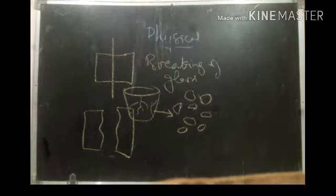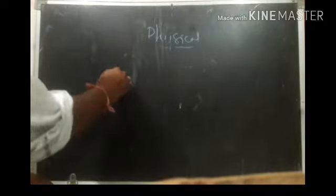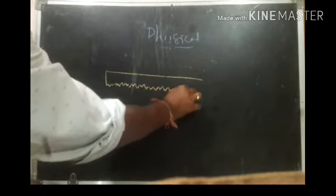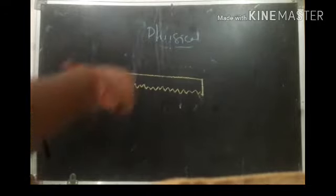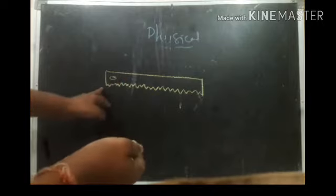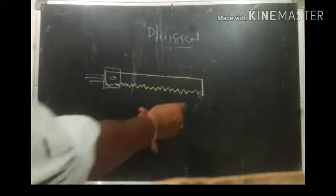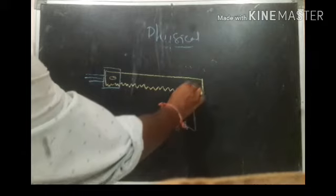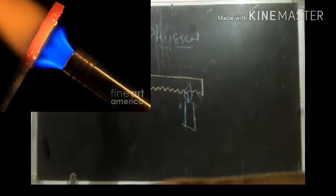Next, let us see the example of heating a hacksaw blade. A hacksaw blade is used for cutting metal objects — it has teeth on one side. Take one hacksaw blade, hold one end with a holder, and keep the other end under a flame. After about 30 to 40 minutes, the area being heated becomes red hot.